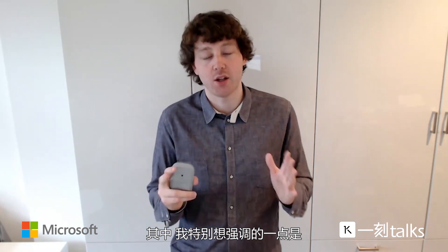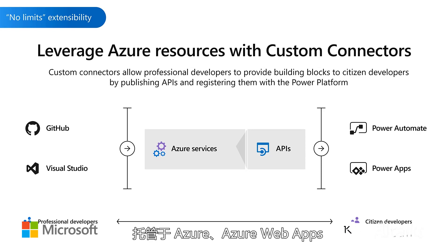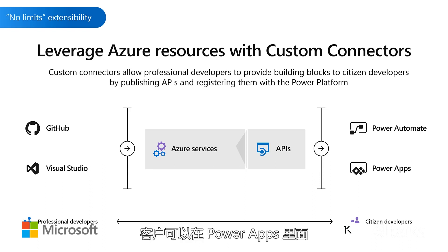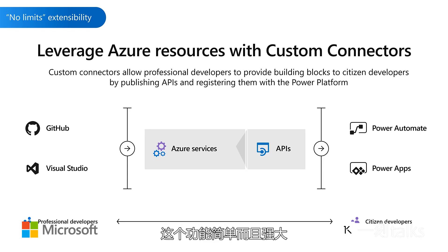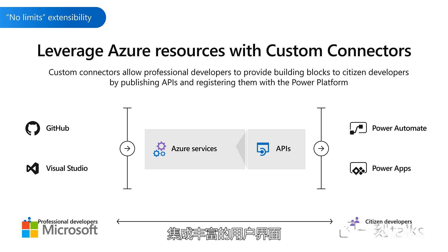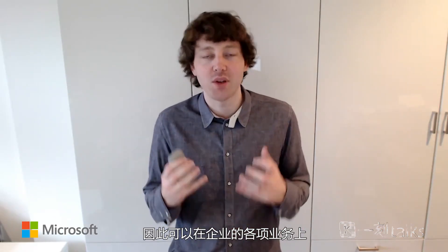There's one thing in particular I want to call out — how you can leverage Azure resources with your custom connectors. It's possible to register any API hosted inside of Azure, on Azure Web Apps or Azure Virtual Machines, as a custom connector inside of Power Apps and the broader Power Platform. This means you can use that custom logic specific to your enterprise inside of Power Apps just like you would use any connector shipped by Microsoft. This makes it incredibly easy and robust to connect to all your existing IT investments. If you have a legacy system or something you built in-house that you want to bring into the Power Platform, this custom connector approach provides a first class, integrated rich user interface right inside of Power Apps.